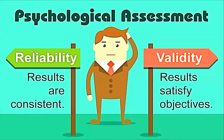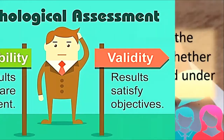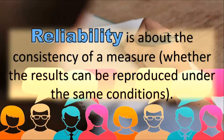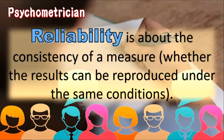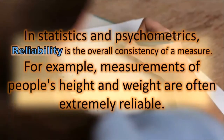In psychological assessment, reliability results are consistent, while validity results satisfy objectives. Reliability is about the consistency of a measure, whether the results can be reproduced under the same conditions. In statistics and psychometrics, reliability is the overall consistency of a measure. For example, measurements of people's height and weight are often extremely reliable.